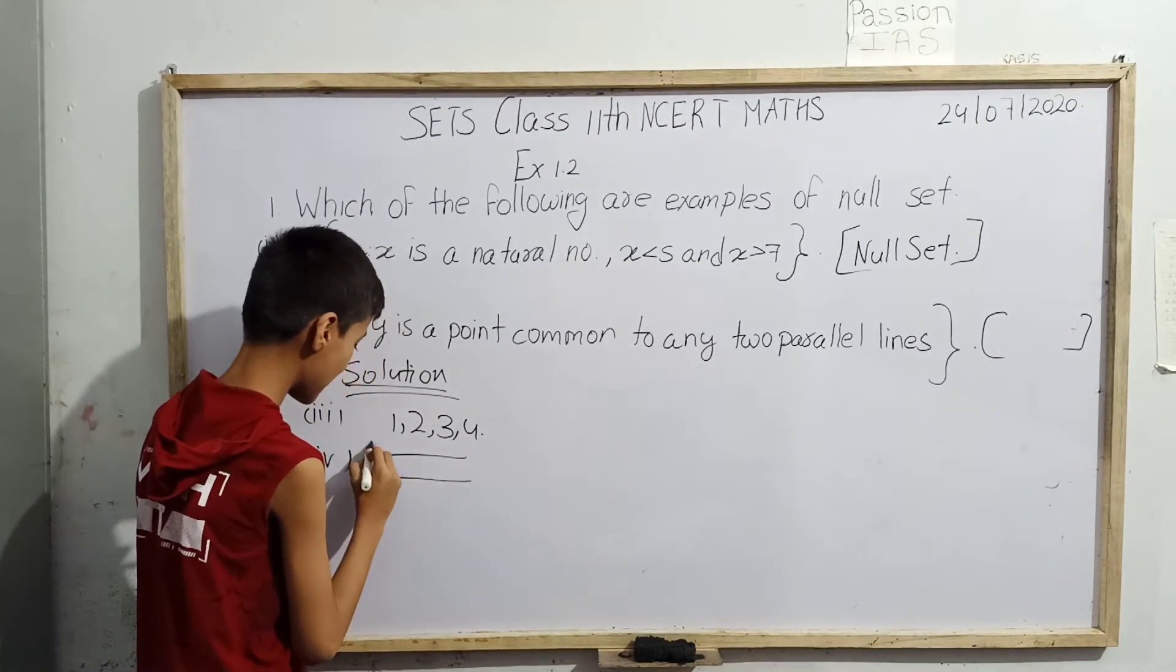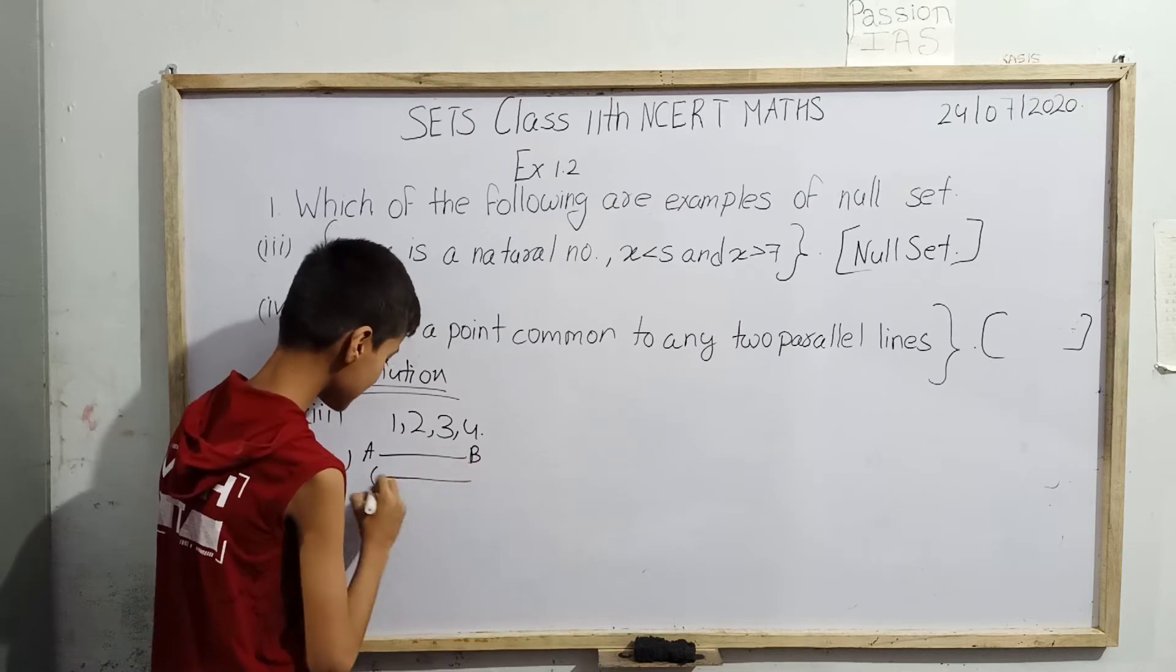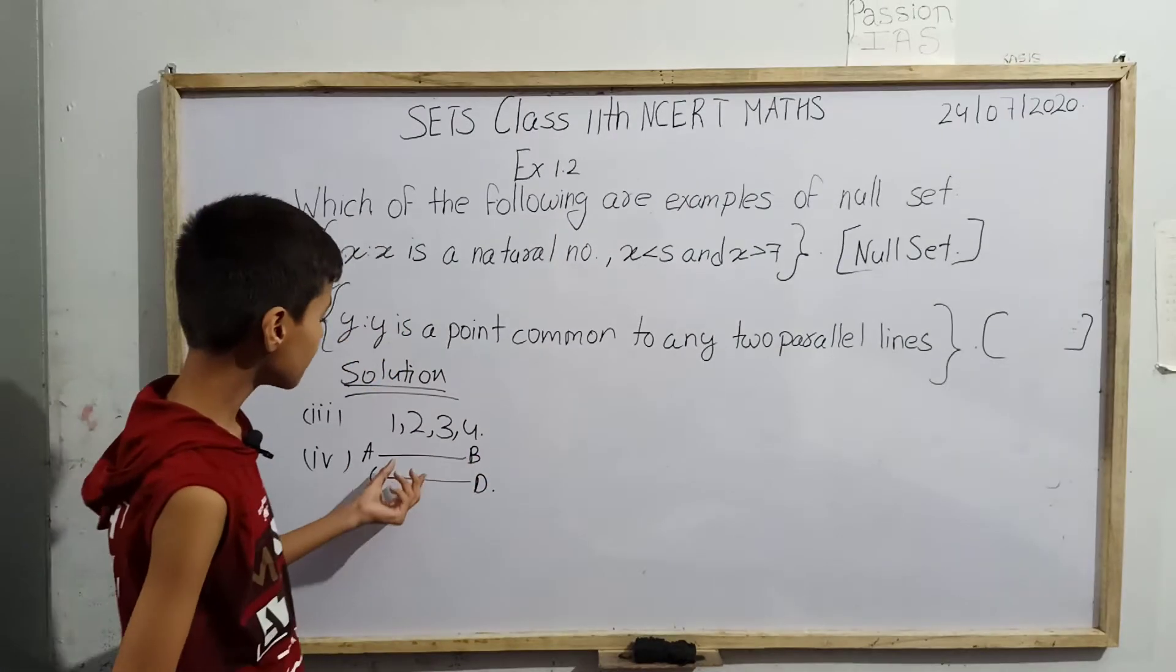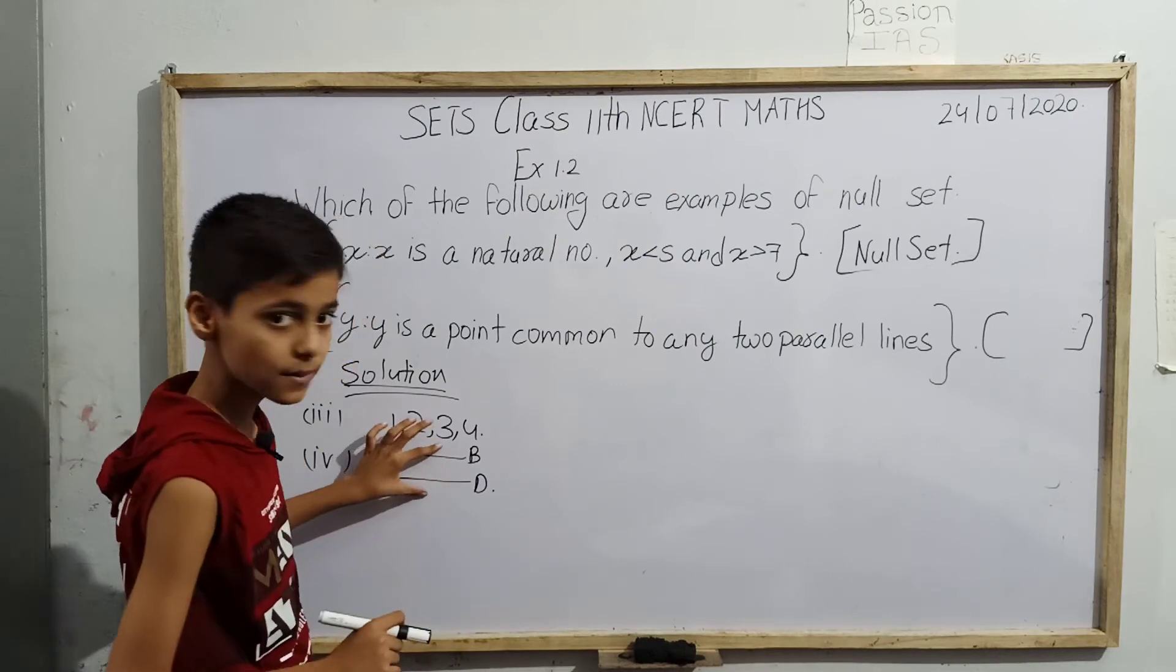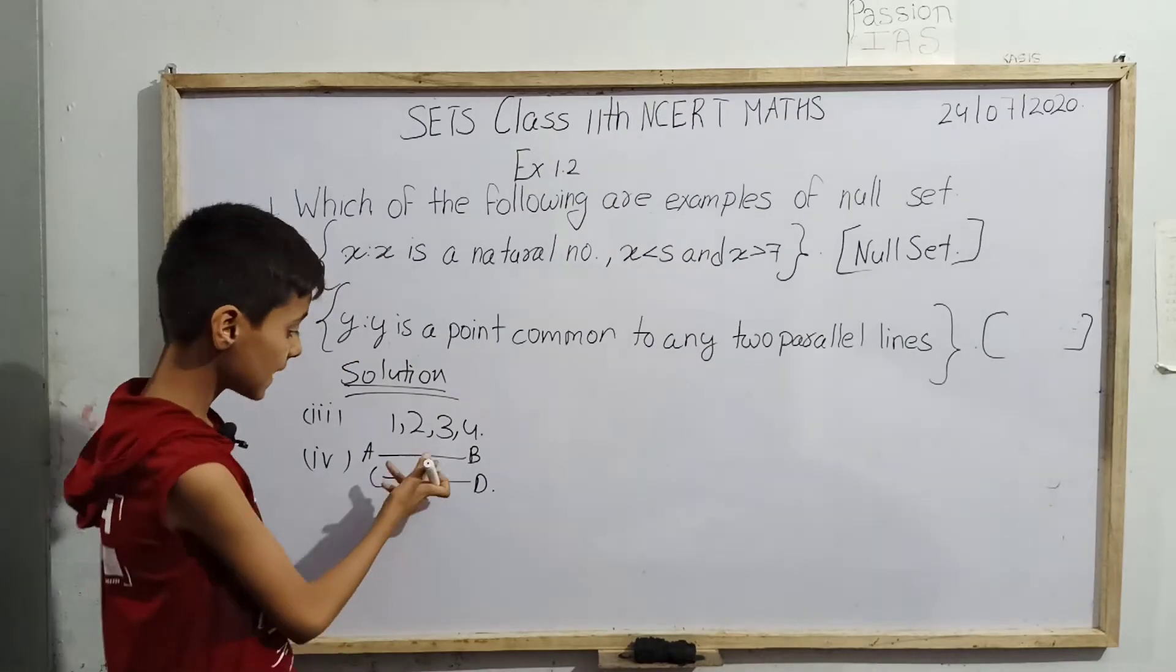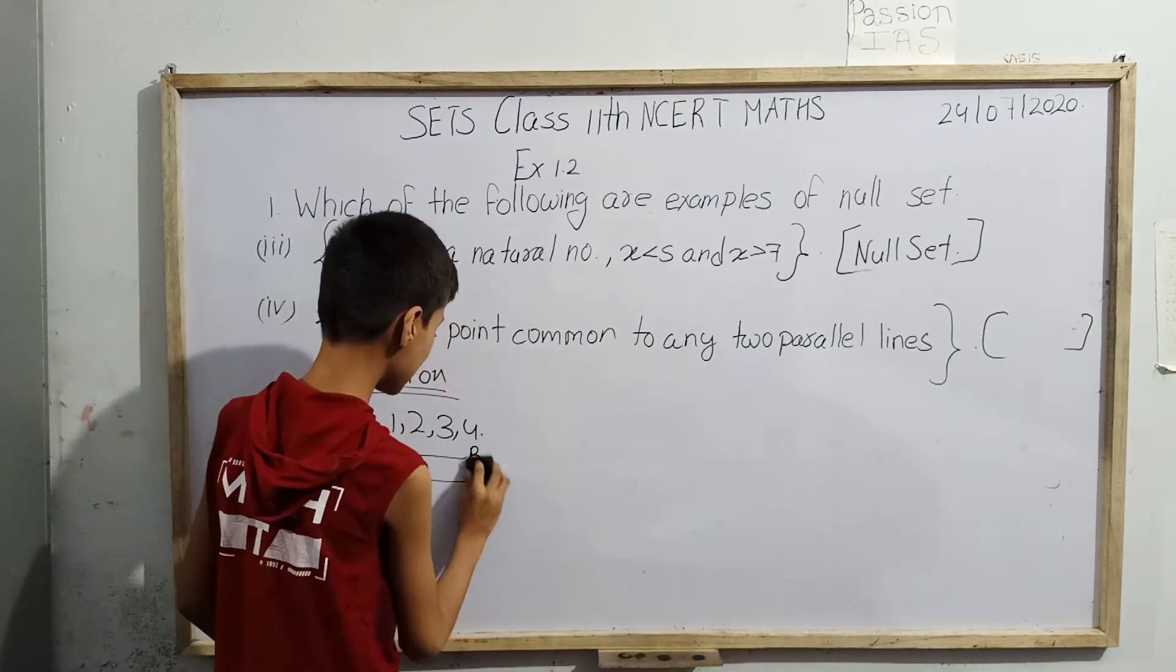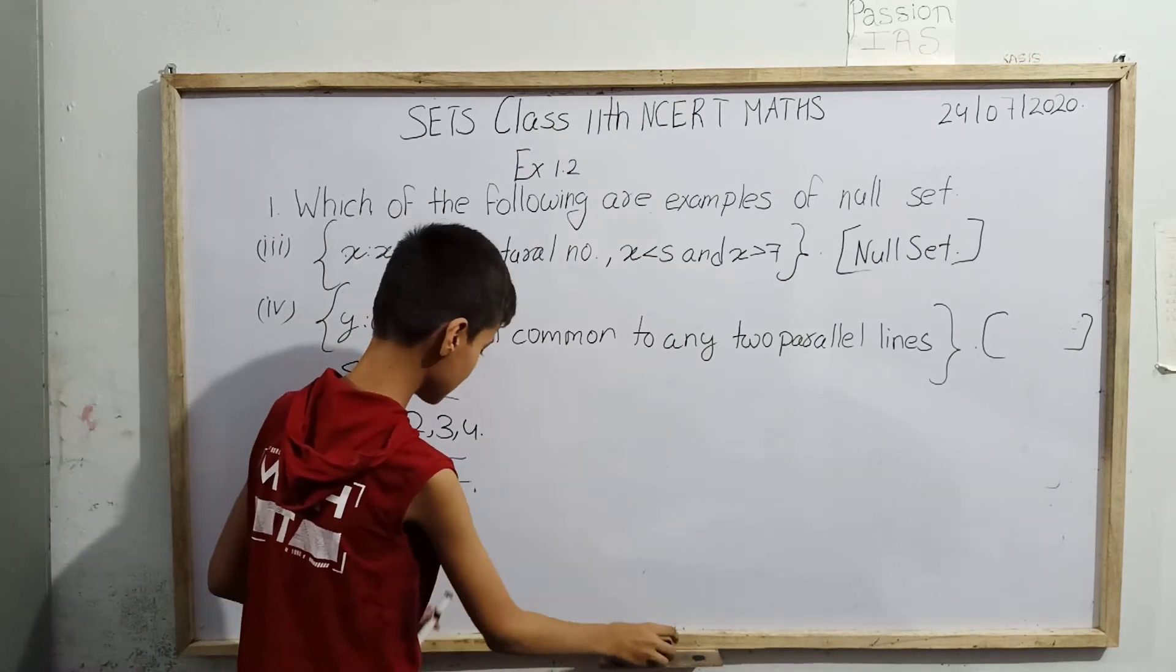First let us draw any two parallel lines AB and CD. We have named them AB and CD. Is there any point common to AB and CD? We can see as they are parallel, so no point is common.